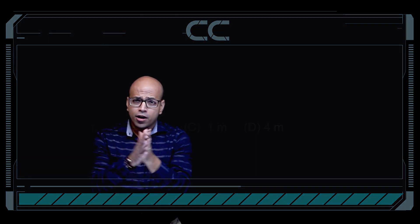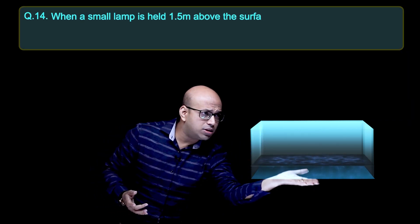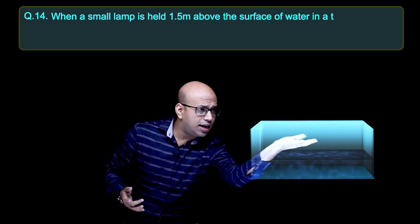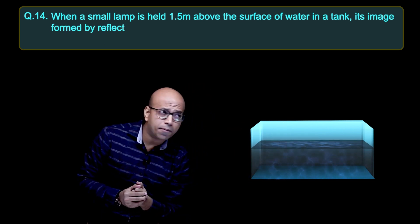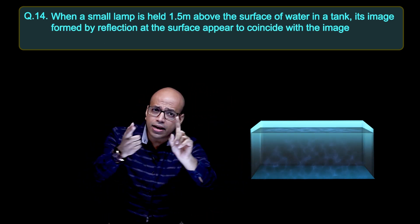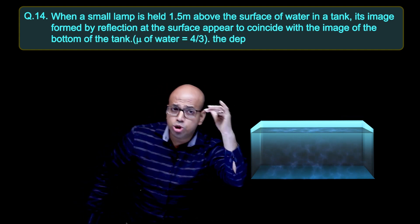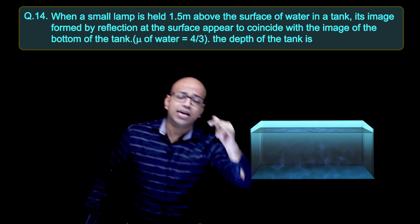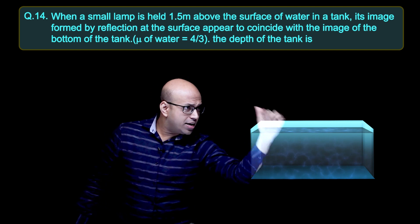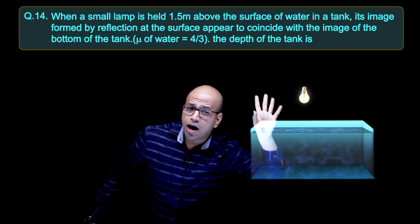This is your tank. We have water here, and the bottom of the tank has water. Now, first of all we have a tank — let's draw it. What is the surface? 1.5 — this is the surface at 1.5 meters.